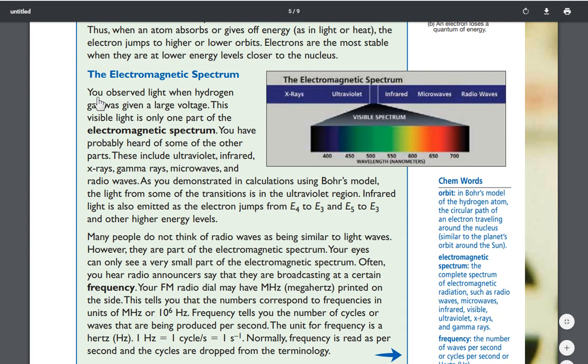The electromagnetic spectrum. You observed light when hydrogen gas was given a large voltage. This visible light is only one part of the electromagnetic spectrum. You have probably heard of some of the other parts. These include ultraviolet, infrared, x-rays, gamma rays, microwaves, and radio waves.